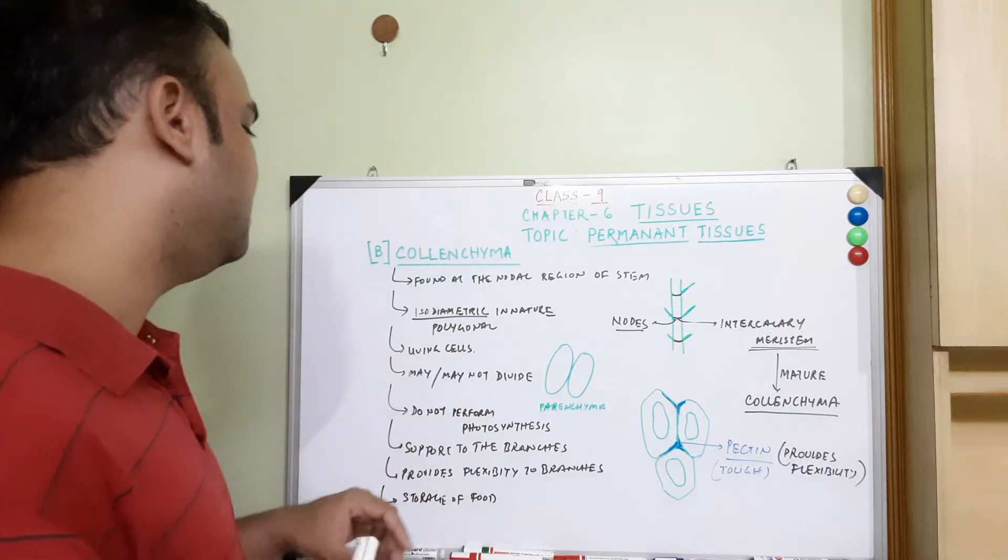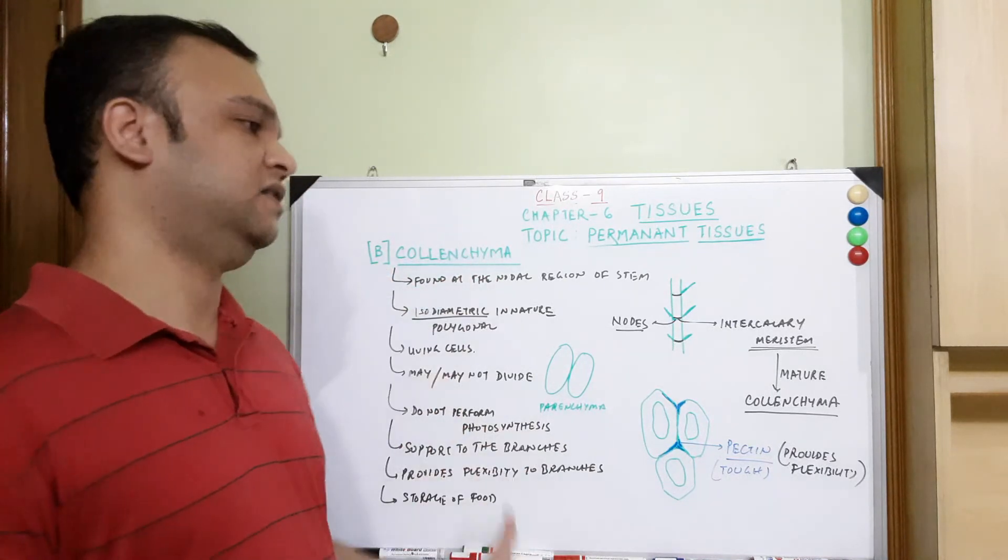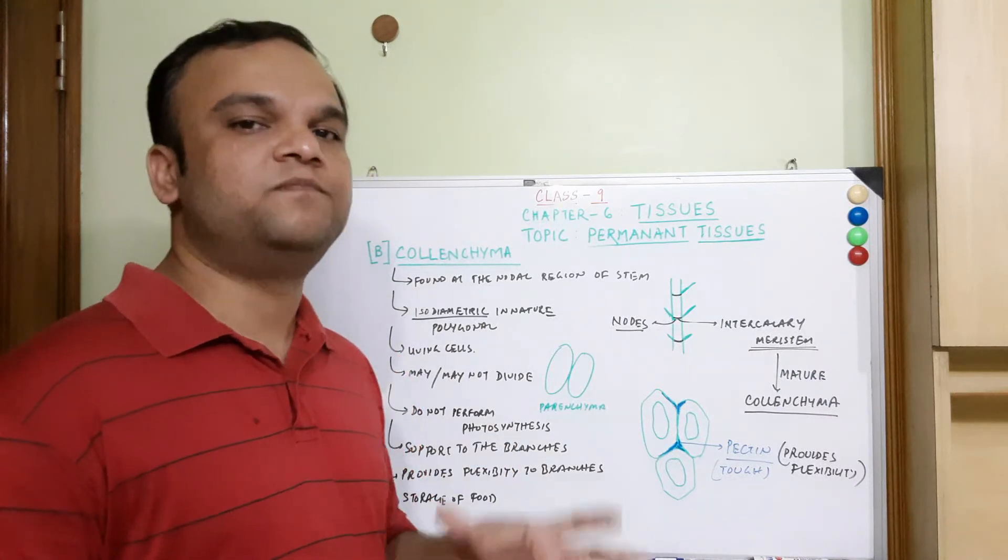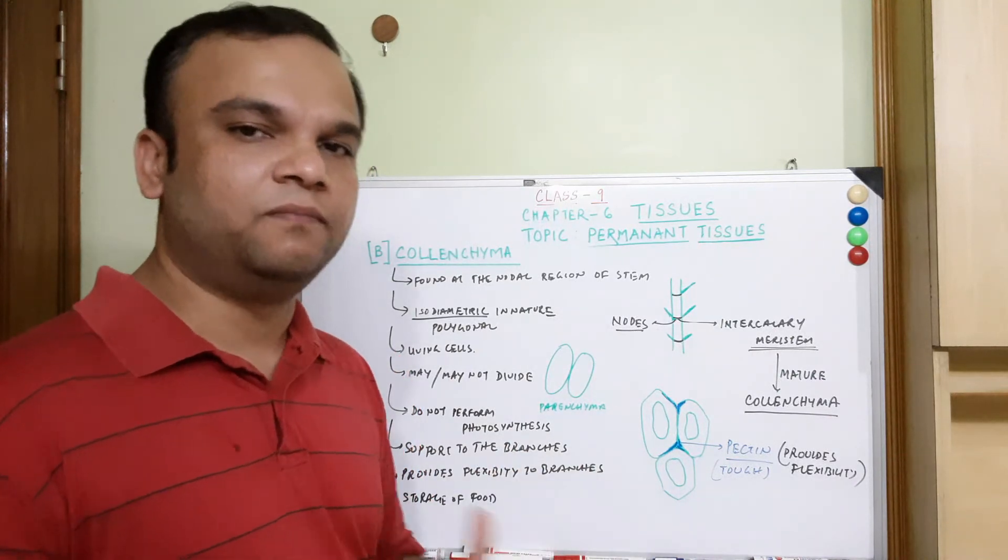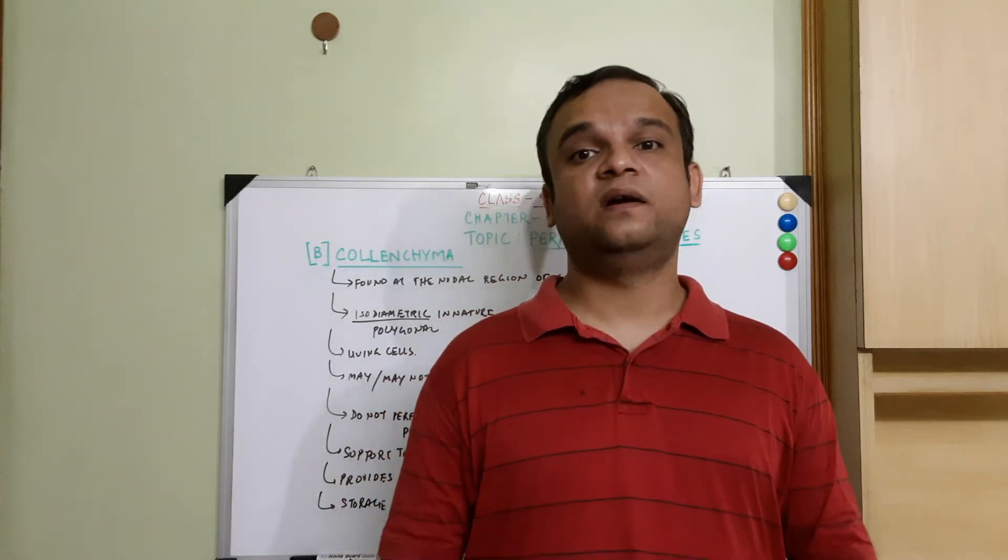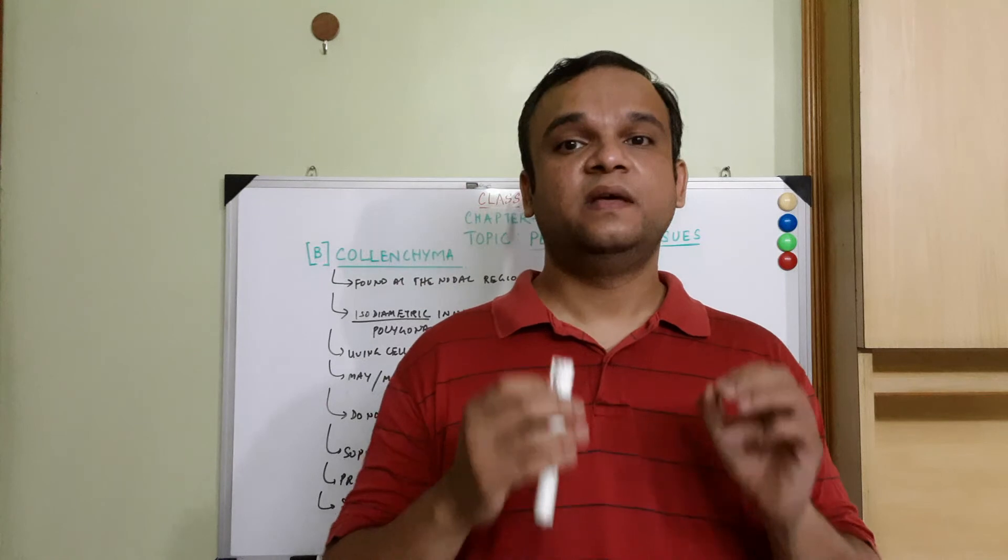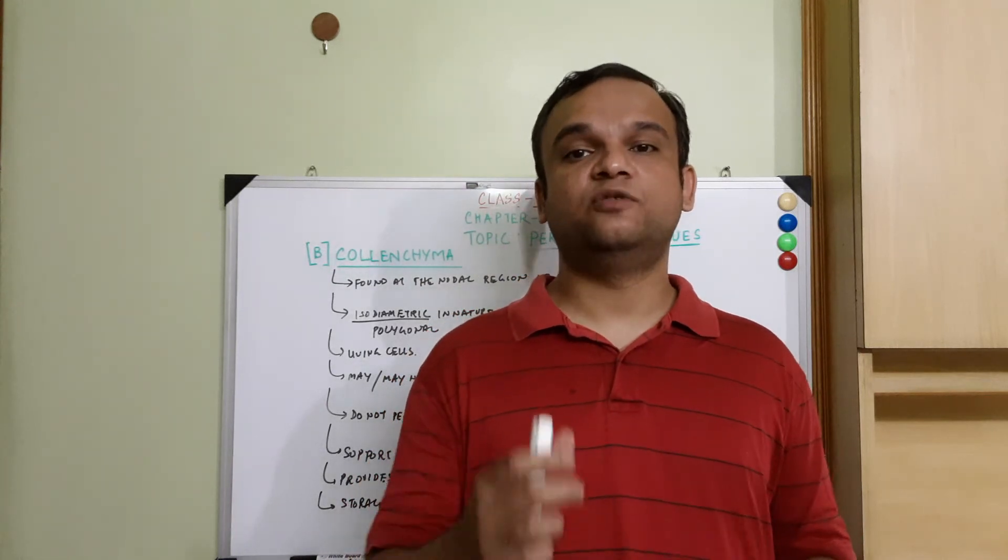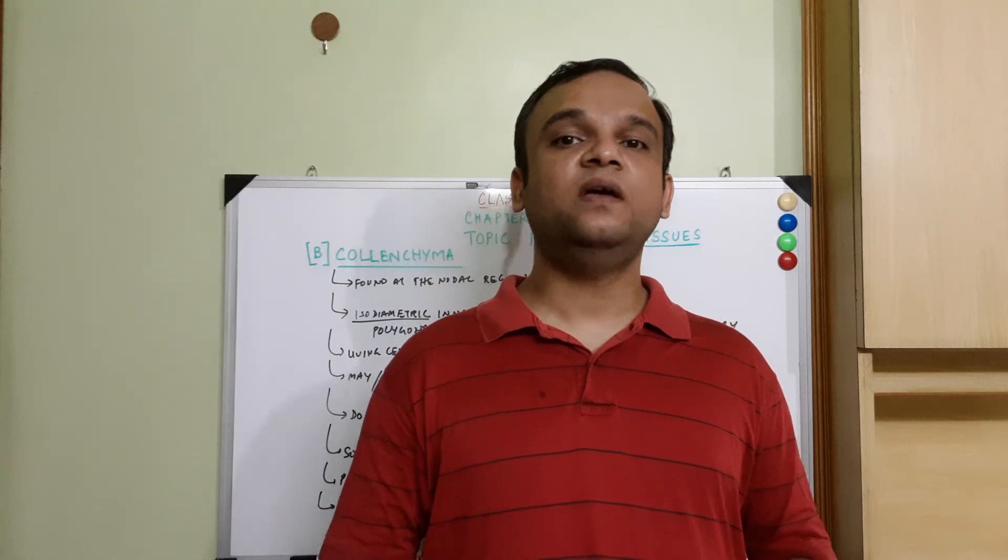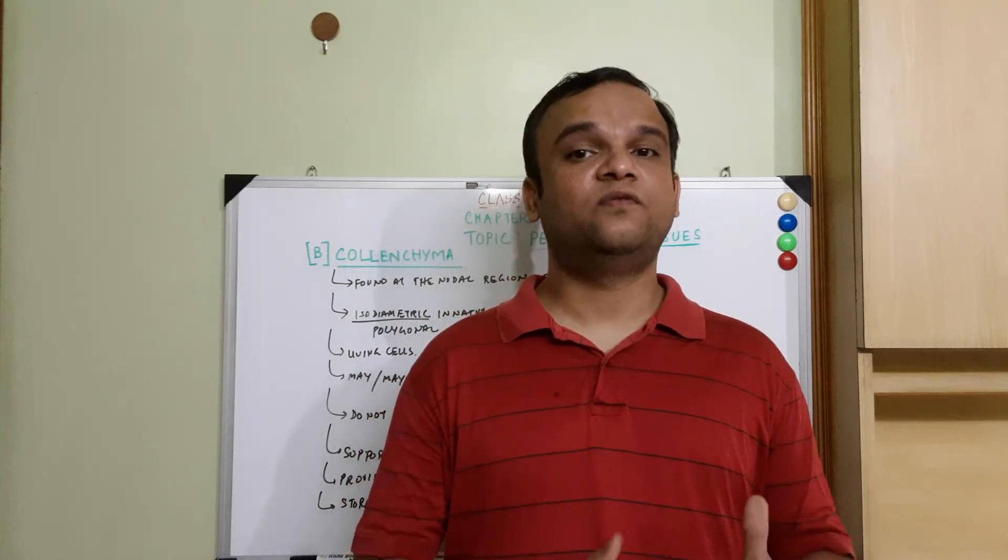So in this manner we have seen how collenchyma tissue appears and what all functions it performs in a plant body. That's all students. So now we have studied about collenchyma tissue and if you understood this content and explanation well, then please subscribe to this channel and forward to your friends and relatives. Thanks a lot for watching this video.